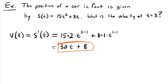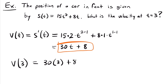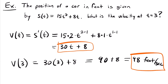We're not done because we also want the instantaneous velocity at time equals 3. Plugging in: velocity at t equals 3 is 30 times 3 plus 8, which equals 90 plus 8, equal to 98. This is a velocity, so we need units: feet per second. Unless specified otherwise, time is assumed to be in seconds. So the instantaneous velocity at time equals 3 is 98 feet per second. We take the derivative of the position function and plug in the value of time we're interested in.